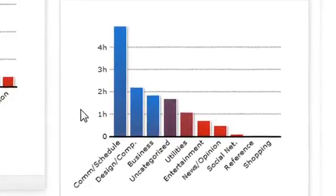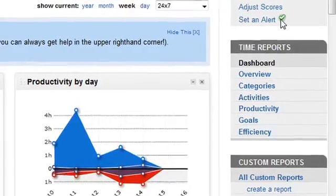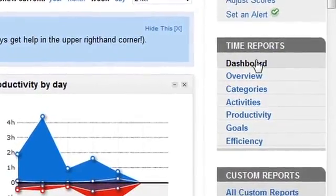They're listed here with all of your breakdowns. Along the right-hand side, you can actually see time reports based on specific categories, activities, productivity, goals, and efficiency.